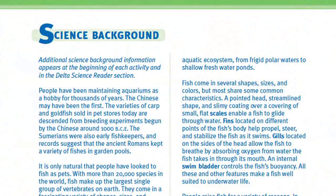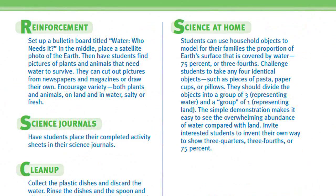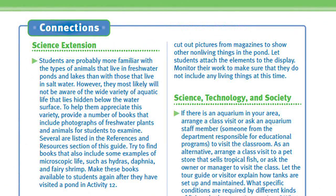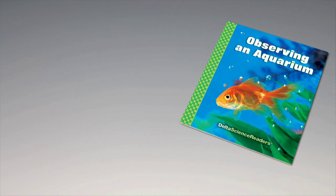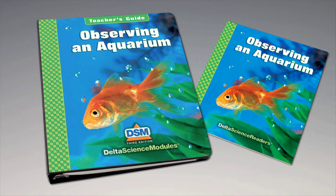To conclude the activity, flush the contents of the plastic dishes down the toilet. Wash the dishes and return them and the magnifiers to the kit. For science background, reinforcement activities, curriculum connections, and information about the Delta Science Reader, please consult your DSM Teacher's Guide.